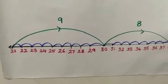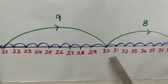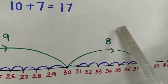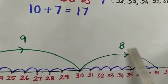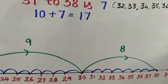Then we will move on to the number line method. From 21 to 30 we have 9. From 30 to 38 we have 8. Now let us add these two answers. 9 plus 8 will give you 17.